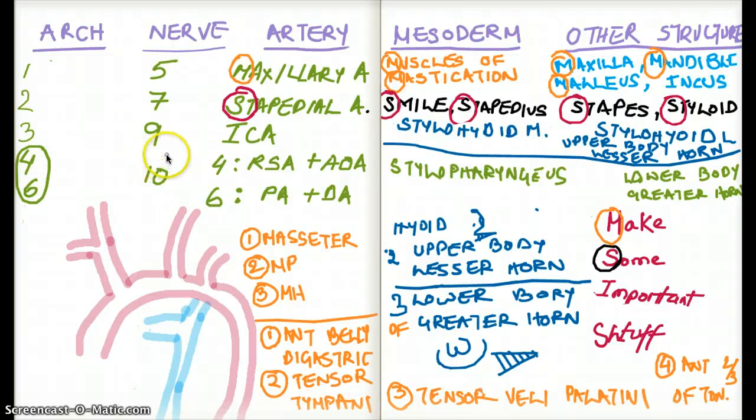Great. Nerve 9. Or glossopharyngeus. Right? Glossopharyngeus. So it rhymes with the stylopharyngeus part of the glossopharyngeus. So that's why from brachial arch 3, the muscle derived from the mesoderm, stylopharyngeus is going to be supplied by cranial nerve 9, which is derived from brachial arch 3.